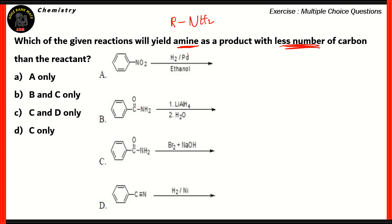So, let's look at reaction A. Reaction A contains nitrobenzene. When it's reacted with hydrogen and palladium in the presence of ethanol, it forms nitrobenzene, which is not an amine. So, any option with A does not work. So, option A is incorrect.